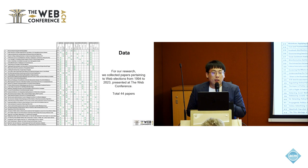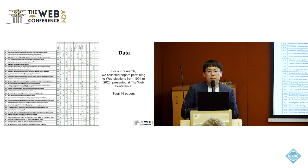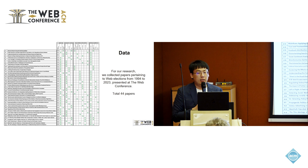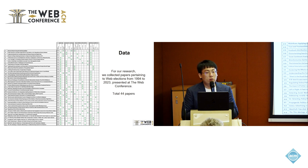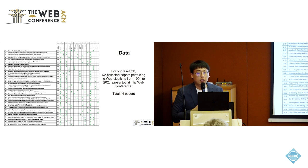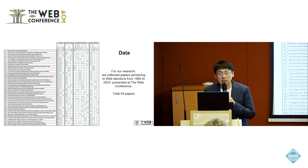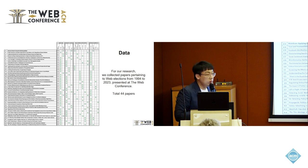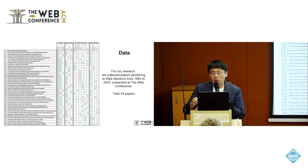In our study, we conducted a detailed meta-analysis of 44 papers published at the web conference, revealing the historical trend in how the web has impacted elections. Notably, social media revolutionized election strategy through immediate candidate interaction, making campaigns more personalized. Big data has become the norm, and advances in AI have intensified the spread of fake news, raising concerns about the fairness of elections.